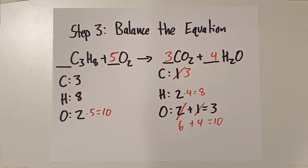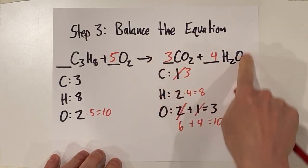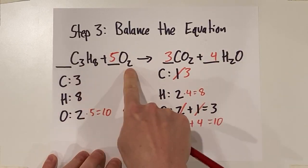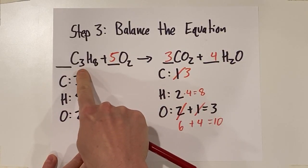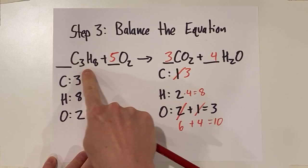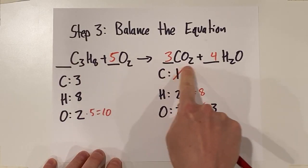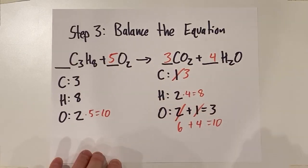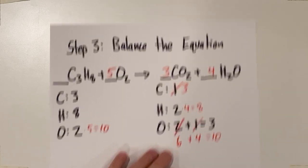We balanced this equation. The key thing with these reactions is you've got to make sure you're predicting the correct products. What we did here was identify that C3H8 was a hydrocarbon — hydrocarbon plus oxygen will always give you CO2 and H2O. Let's go ahead and get into our next example.